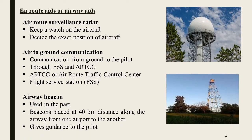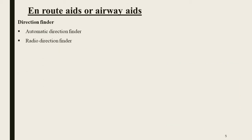Next, airway beacon. It was used in the past. Beacons were placed at 40 km distance along the airway from one airport to another, giving guidance to the pilot. Also, the Automatic Direction Finder, ADF, mainly a radio direction finder.